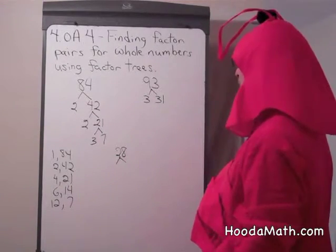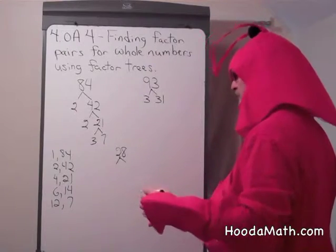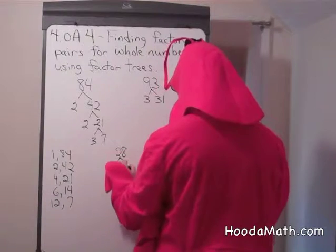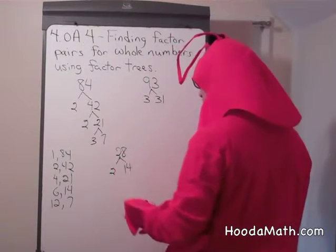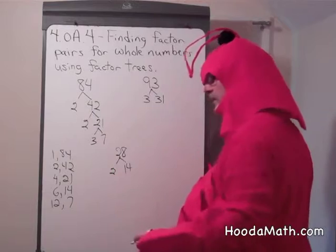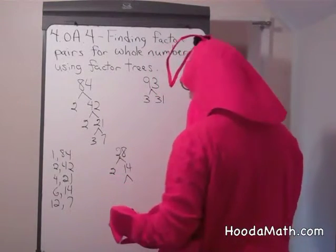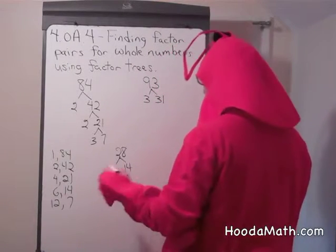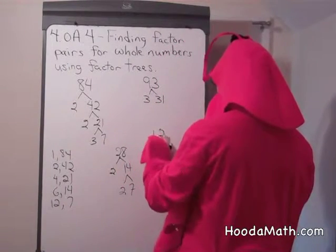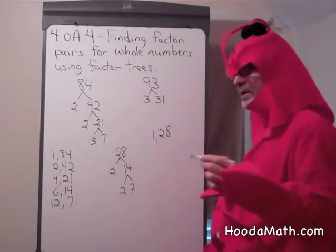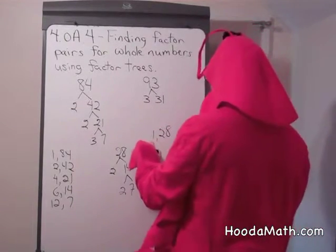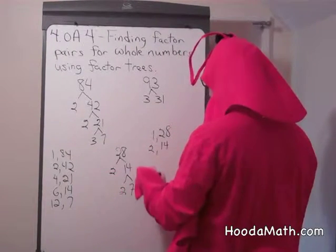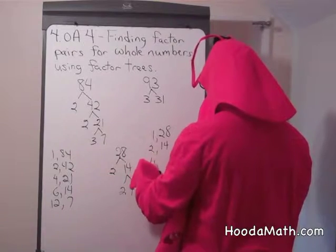28 — the number ends in an 8, so we know that it's divisible by 2. 2 goes into 28, 14 times. So 2 and 14 are two factors. 14 can be divided into 2 and 7. So all the factors: we could say 1 and 28 — a number is always a factor of itself — 2 and 14, and 4 and 7.